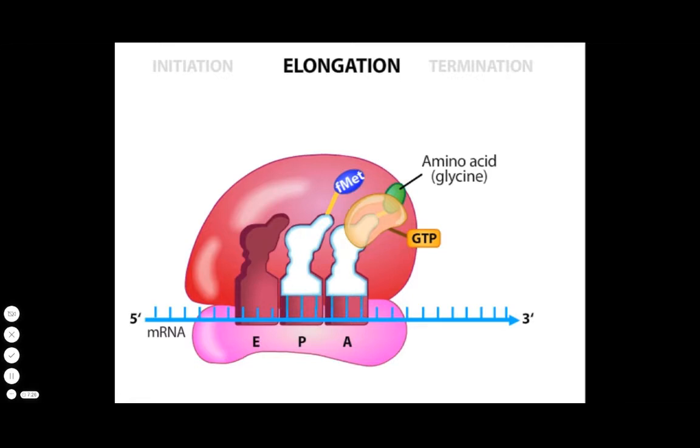In the second step, the ribosome's peptidyl transferase activity catalyzes the formation of a peptide bond between the new amino acid in the A site and the previous amino acid in the P site. Simultaneously, GTP is hydrolyzed and the resulting EF-TU GDP is expelled.